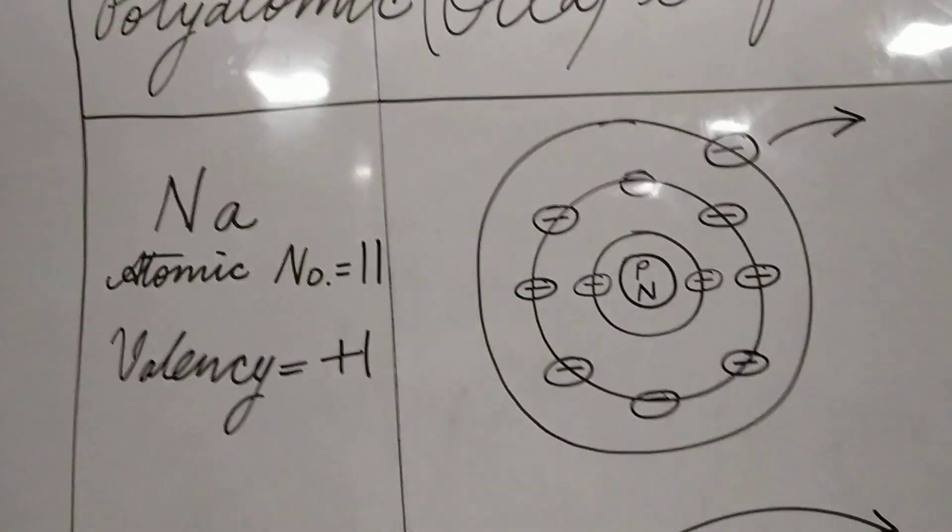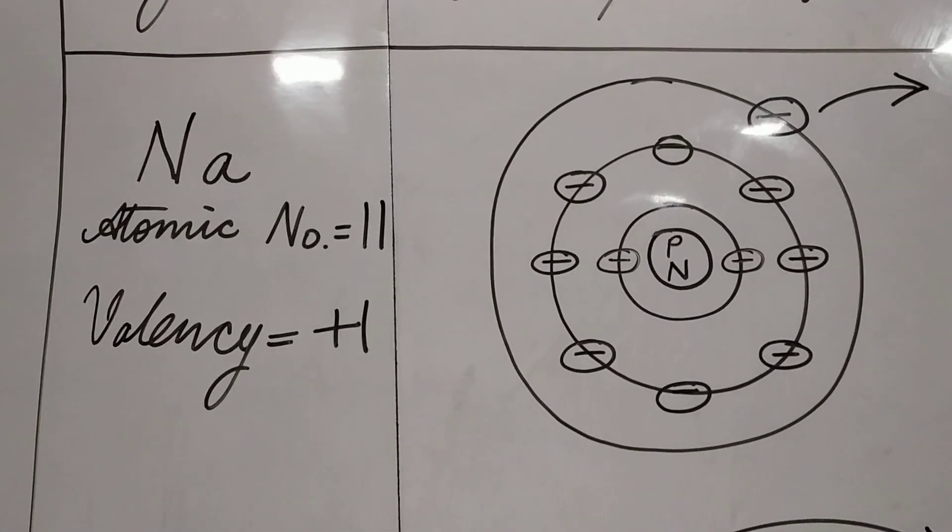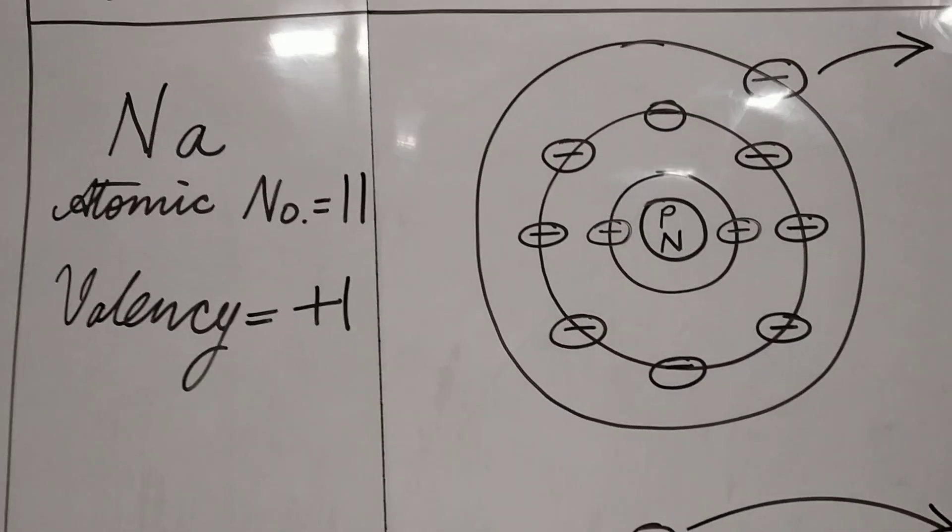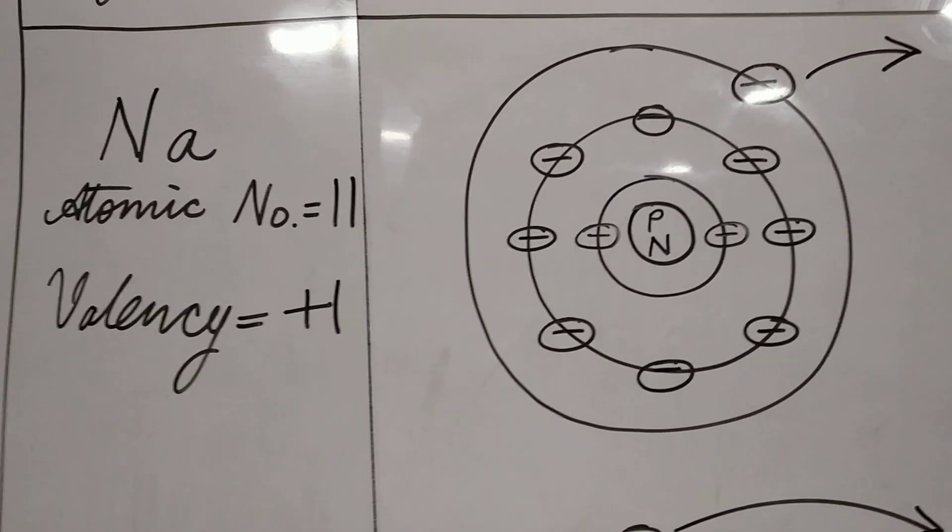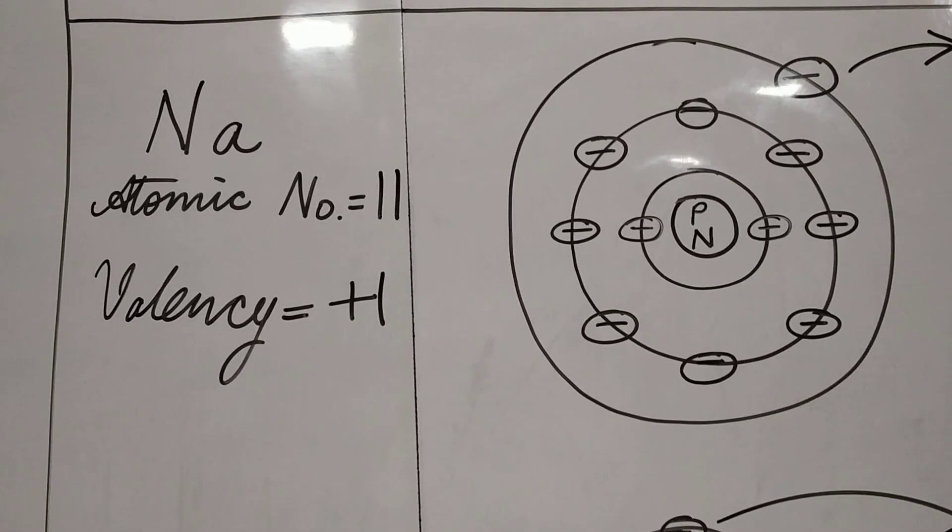Here, I have taken the example of sodium. Sodium has the atomic number 11. Its valency is plus 1. I will get to how it is plus 1.